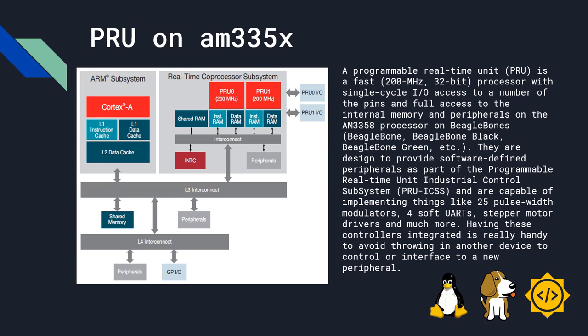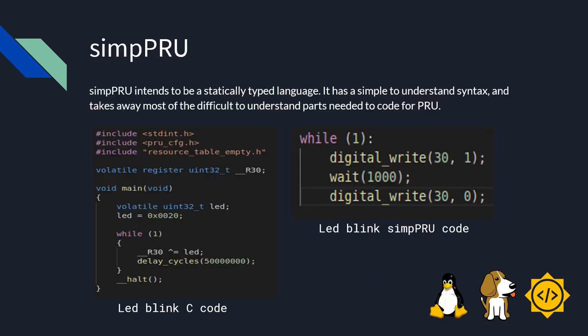SimPRU intends to be a statically typed language. It has a simple-to-understand syntax and takes away most of the difficult-to-understand parts needed to code the PRU. As you can see in the examples below, the one on the left side is an LED blink code written in C and the one on the right is the LED blink code written in SimPRU. As you can see, the SimPRU code is reduced and easier for a beginner to understand.